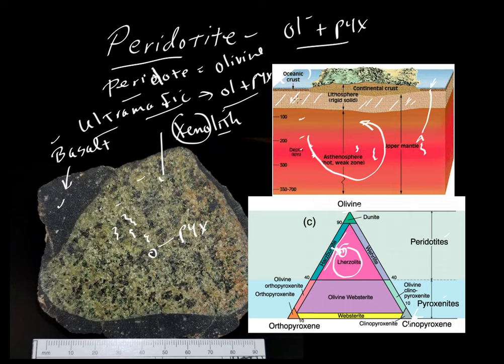But this stuff up here is cold and rigid enough that it does not take part in that convective flow. So this is the mantle lithosphere here, and this is the convective mantle here. They're both made of peridotite.